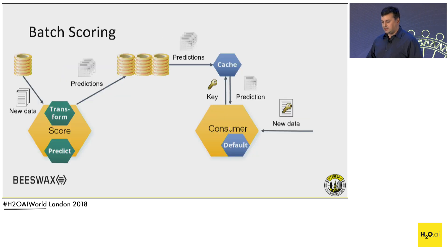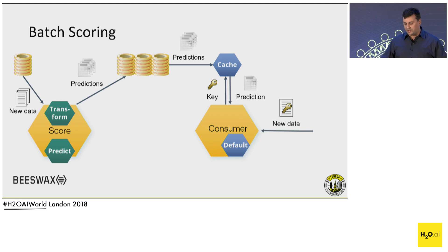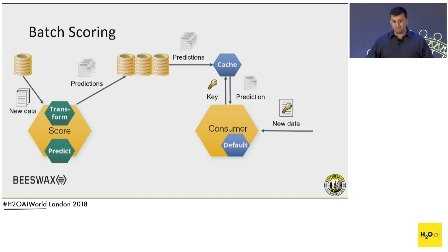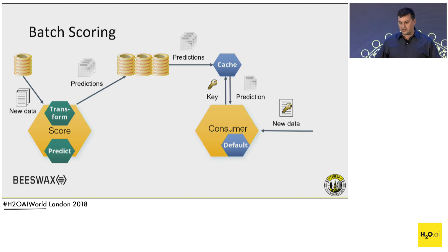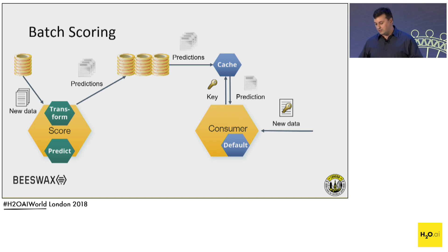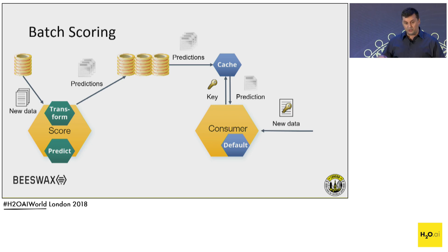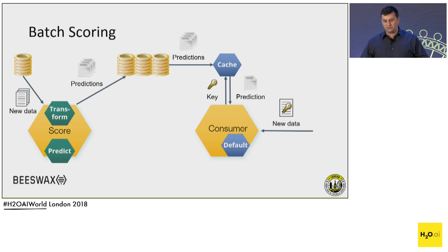In batch scoring, left to right: we get new data, a scoring engine runs offline, does the transformations and predictions, the predictions are stored on disk and loaded into a cache. That cache is available in real time to a consumer that uses the prediction for business logic. When a request with new data comes in, the consumer computes a key and looks up the data it needs. There may be a default for cache misses.